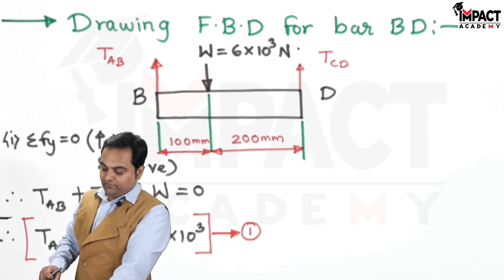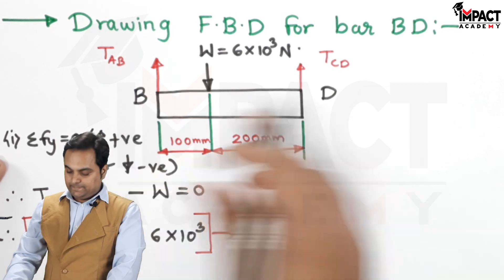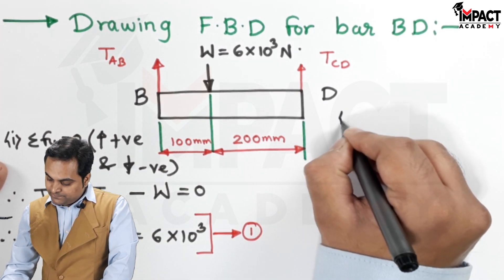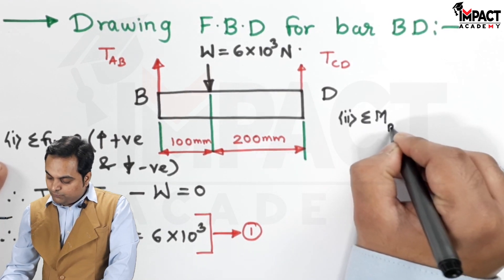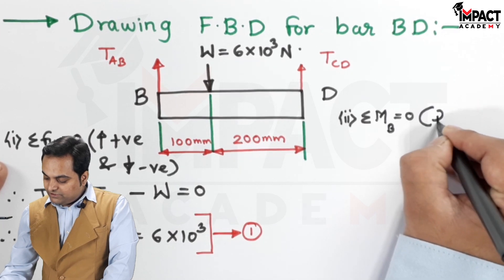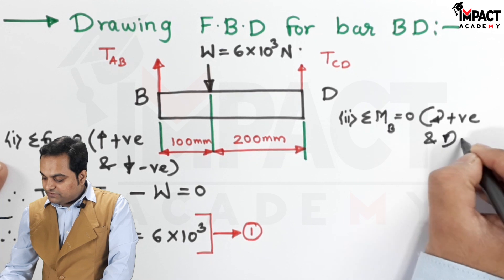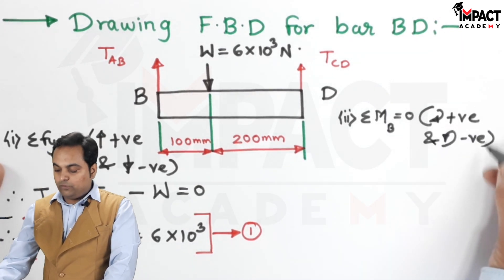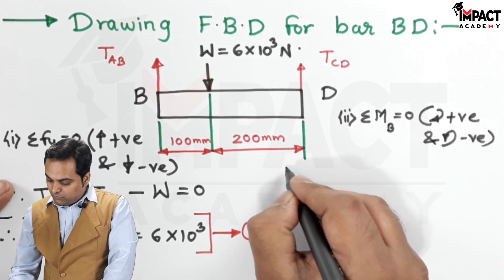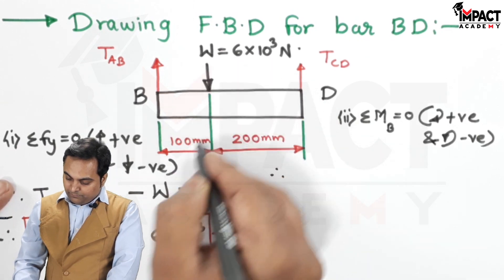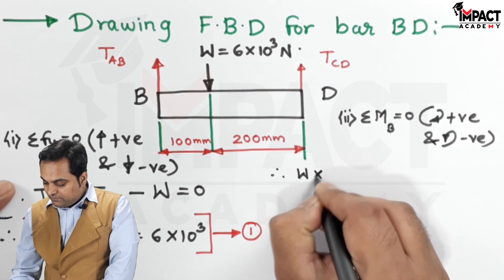Now, I will use the second condition of equilibrium, that is I would be taking the moments of all forces about point B. So the next condition of equilibrium is summation of moment of all forces about point B is equal to 0. And the convention is clockwise moments are treated positive and anticlockwise moments are treated negative. You can also take the opposite of these and that would give you the same answer. Now, I am taking clockwise as positive. So W into 100 that is producing a clockwise moment, it is W into 100.